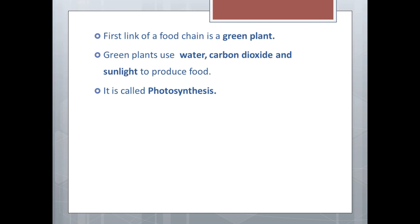Most commonly, the first link of a food chain is always a green plant. Here, this green plant uses water, carbon dioxide, and sunlight to produce their own food. This process is known as photosynthesis. As these green plants produce their own food, they are known as the producers.